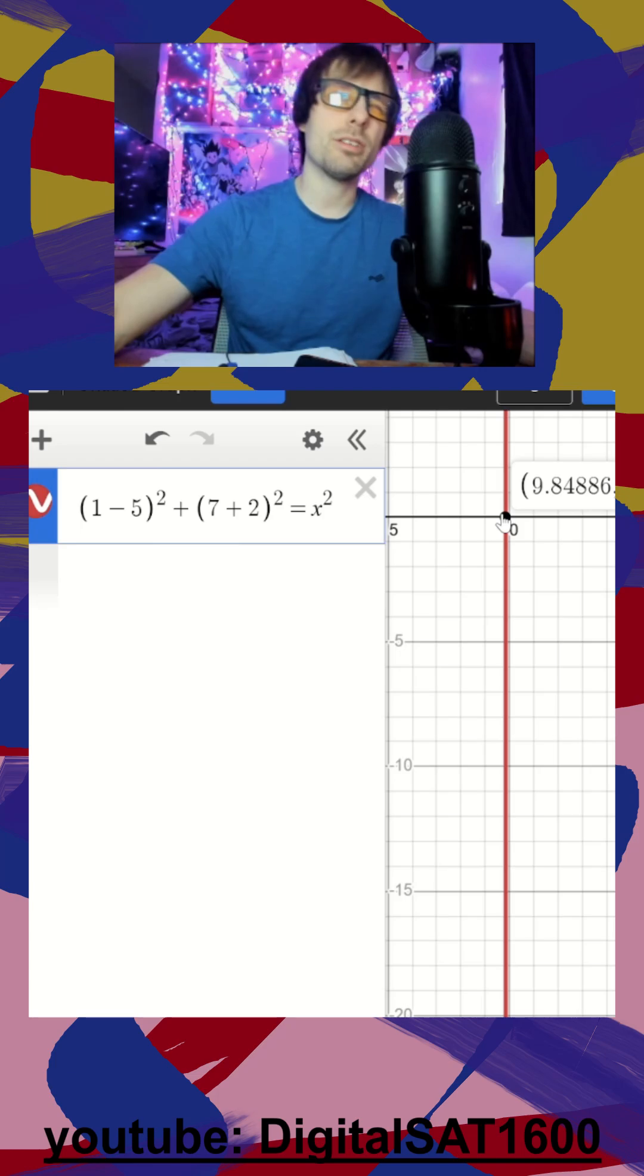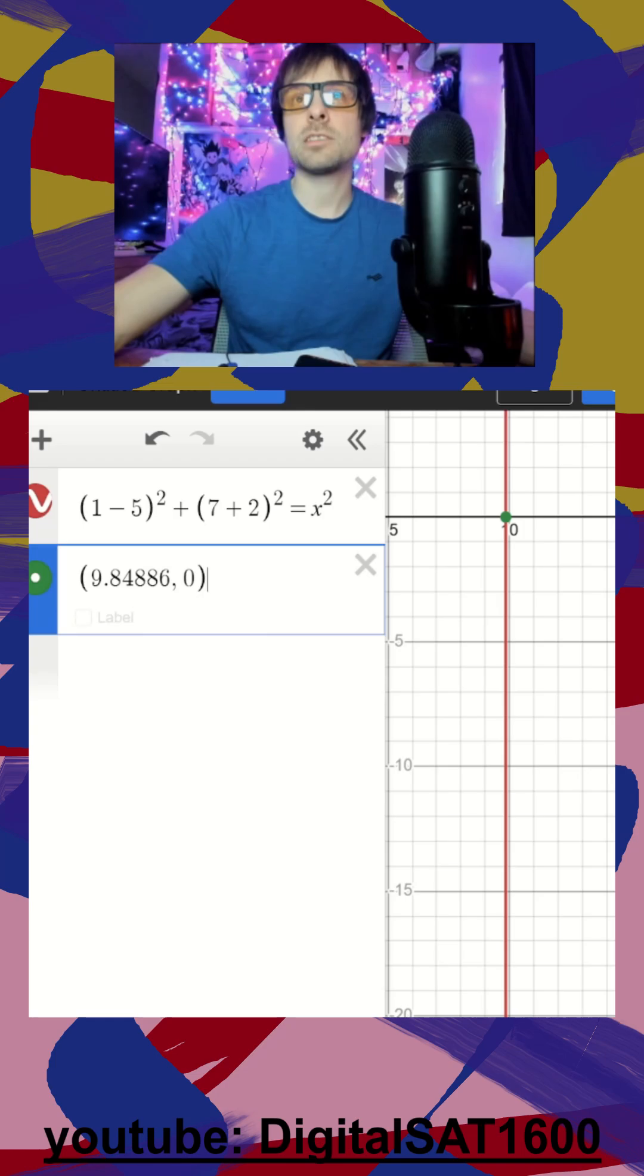It gives me this weird value. But remember, I don't want radius, I want radius squared. So instead of typing that, I'm going to export it and get rid of the coordinate notation.